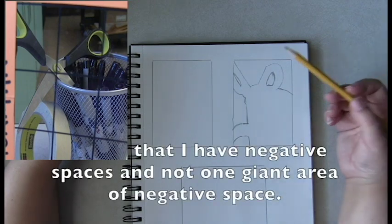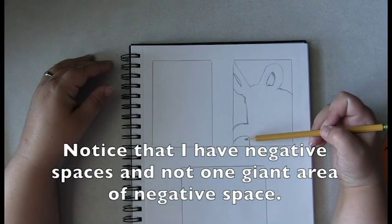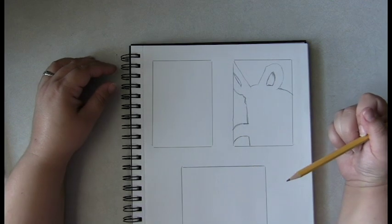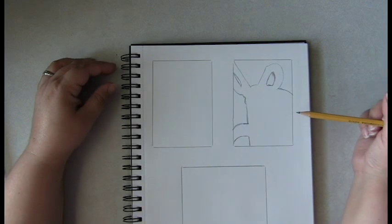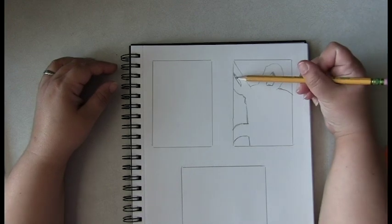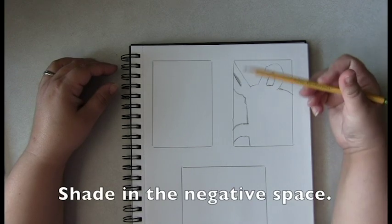You are going to notice that I have negative spaces and not one giant area of negative space, nor do I have one giant area of the positive image. You are then going to shade in the negative space.